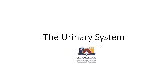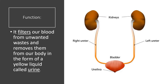Hello Grade 5 students! Today's lesson is going to be about the urinary system. As we usually do whenever we start a new system, we have to get to know its function and its organs. The function of the urinary system is that it filters our blood from unwanted waste and then removes this waste